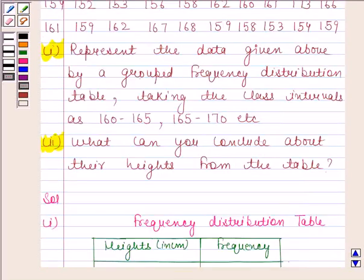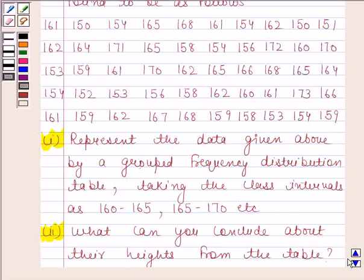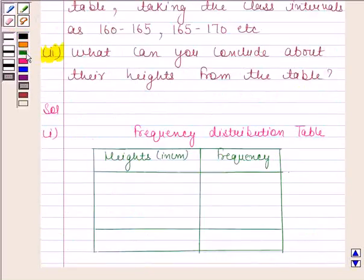Let us see. In the question, we are given that we have to take the class intervals as 160 to 165, 165 to 170, etc. Now, here, the minimum value is 150 and maximum value is 173. So, we take classes as 150 to 155.